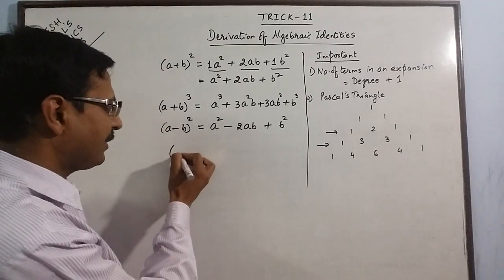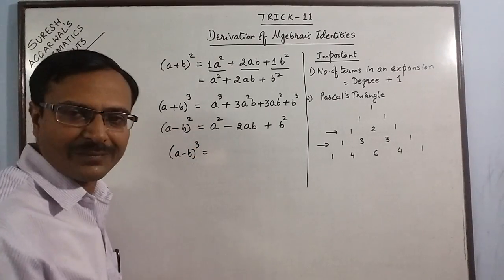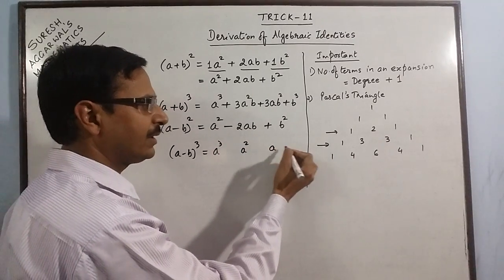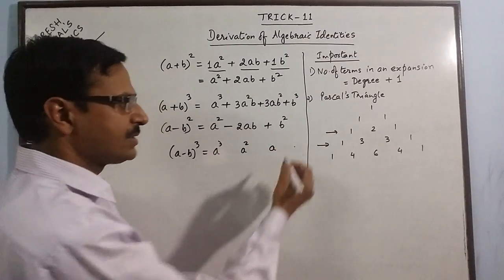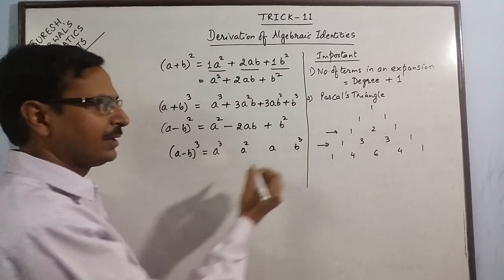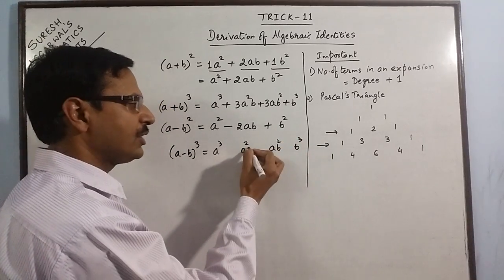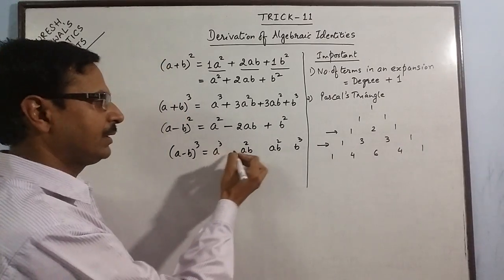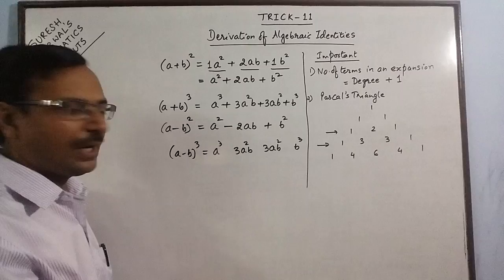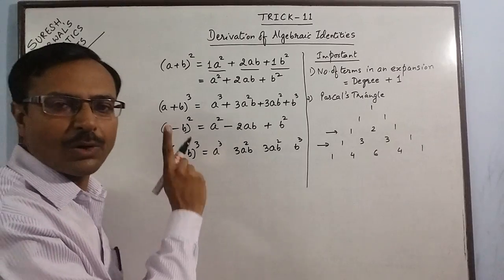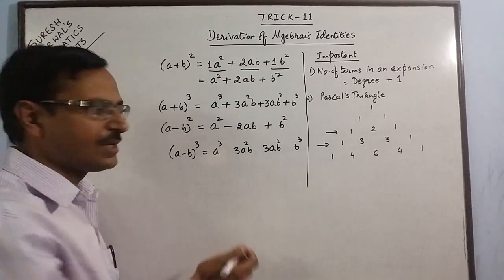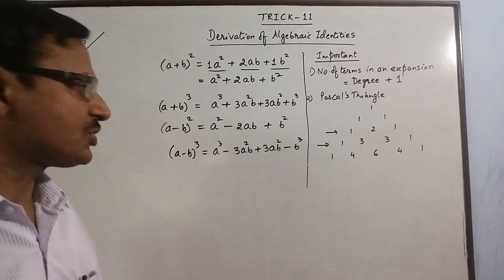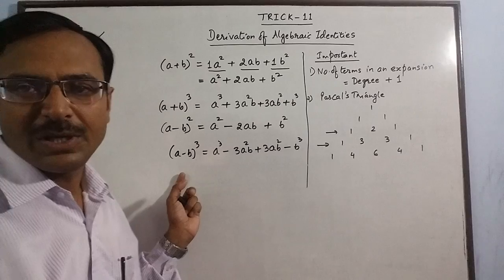A minus B whole cube follows the same process. A with highest power 3, then reduce by 1 twice, then A vanishes. B starts at B cubed and reduces by 1 each term until no B. 4 terms so coefficients are 1, 3, 3, 1. With a minus sign we alternate the signs: positive, negative, positive, negative. So A minus B whole cube equals A cubed minus 3A squared B plus 3AB squared minus B cubed.